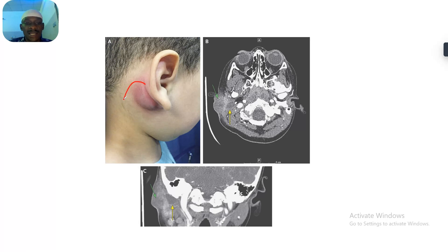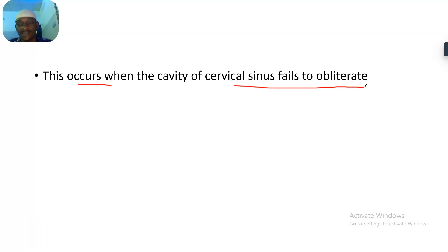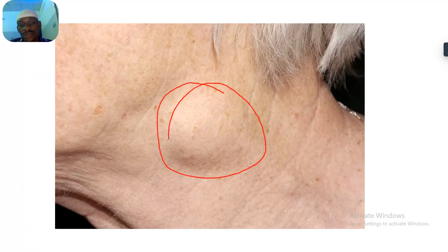A cyst is just a growth — a swelling at the skin level. When it has an opening to the skin, it is called a fistula. This is an example of a cyst. This occurs when the cavity of the cervical sinus fails to obliterate.